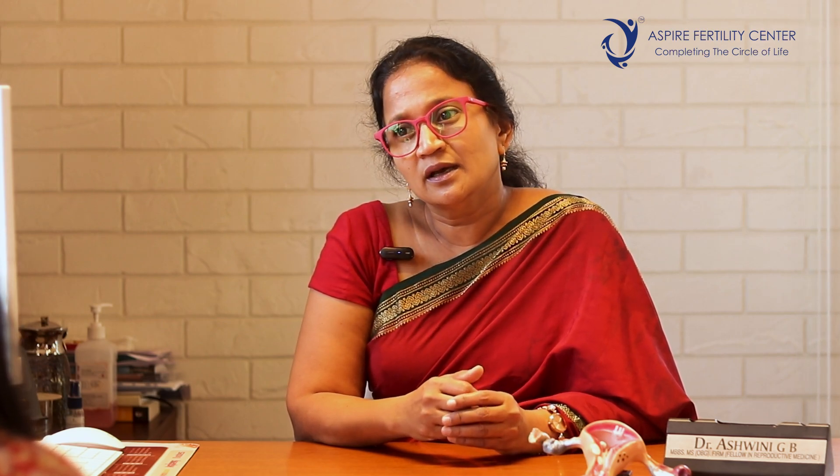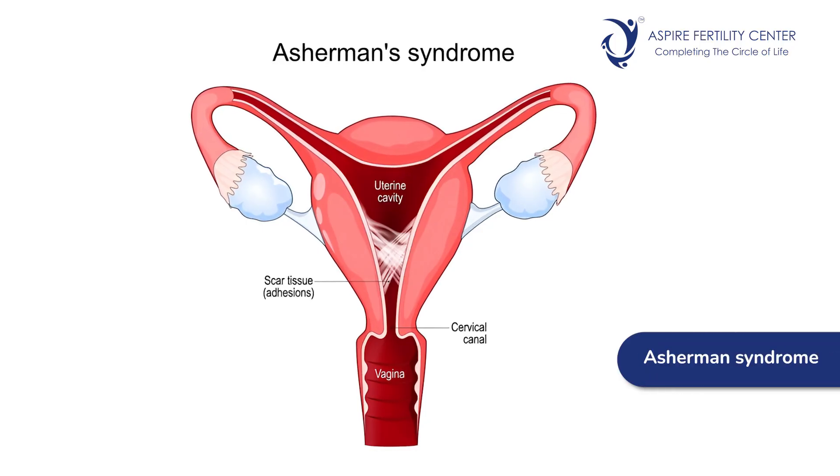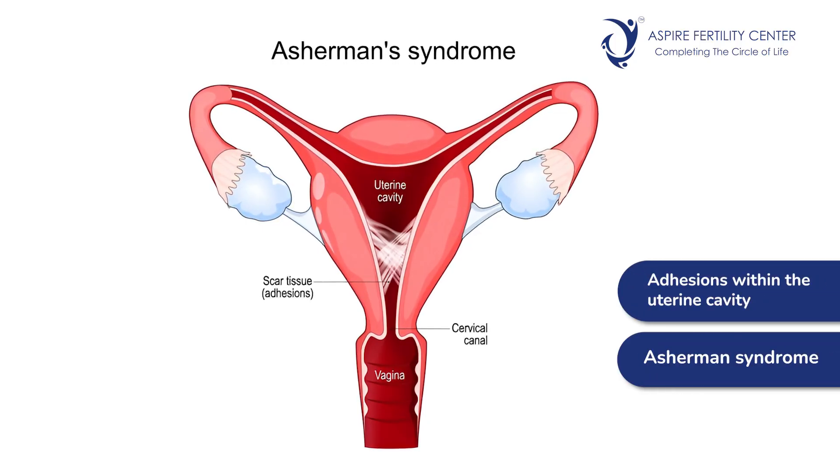Checking for a septum internally inside the uterus is done by hysteroscopy, and a correction can also be done by hysteroscopy. The second condition where recurrent miscarriages can be complicated is Asherman's syndrome, or adhesions within the uterine cavity. This can also be checked and found on hysteroscopy, and corrective surgery can be done at the same time.